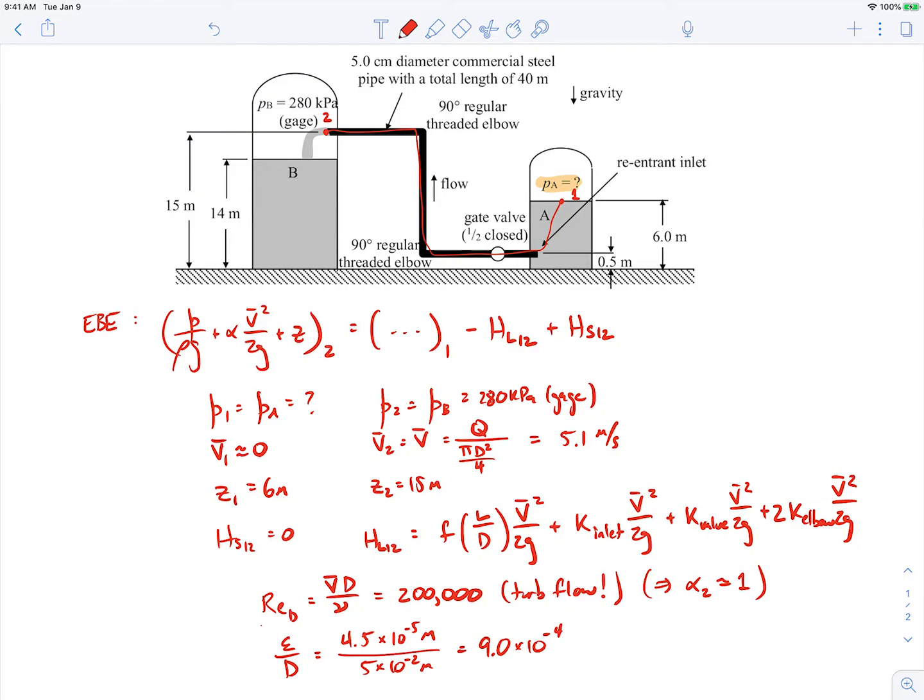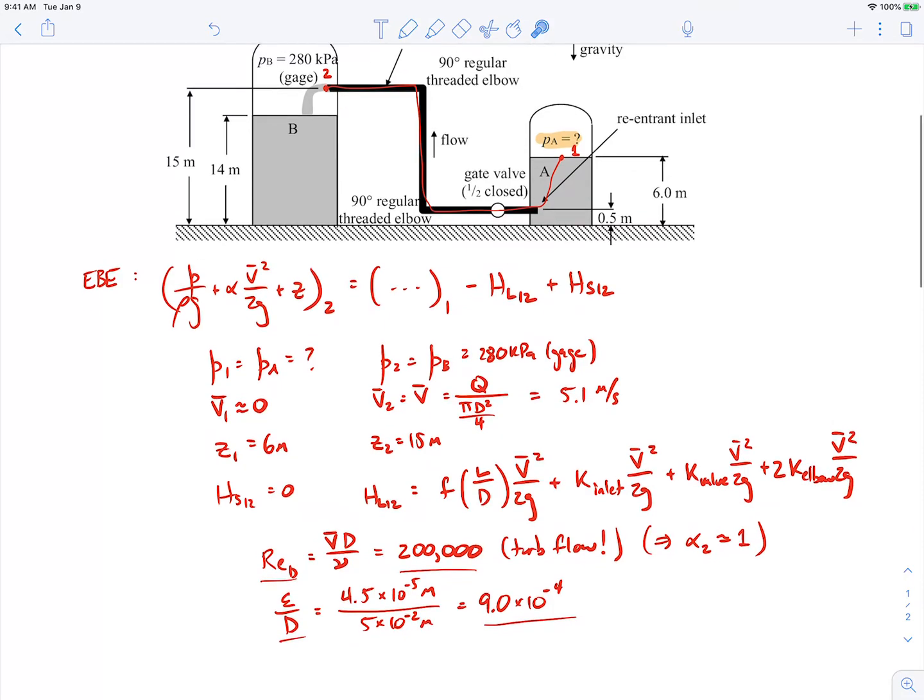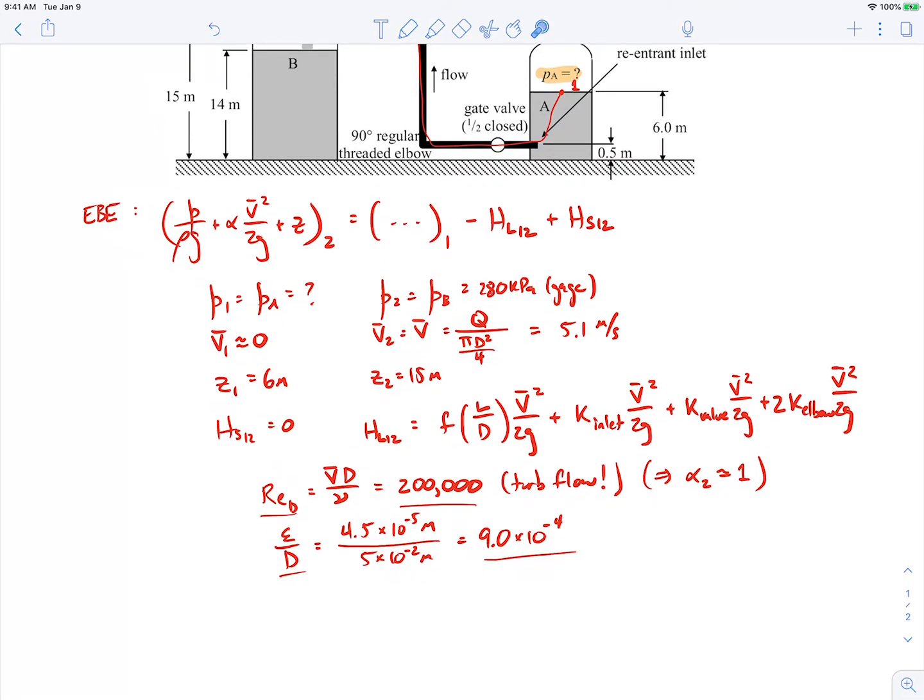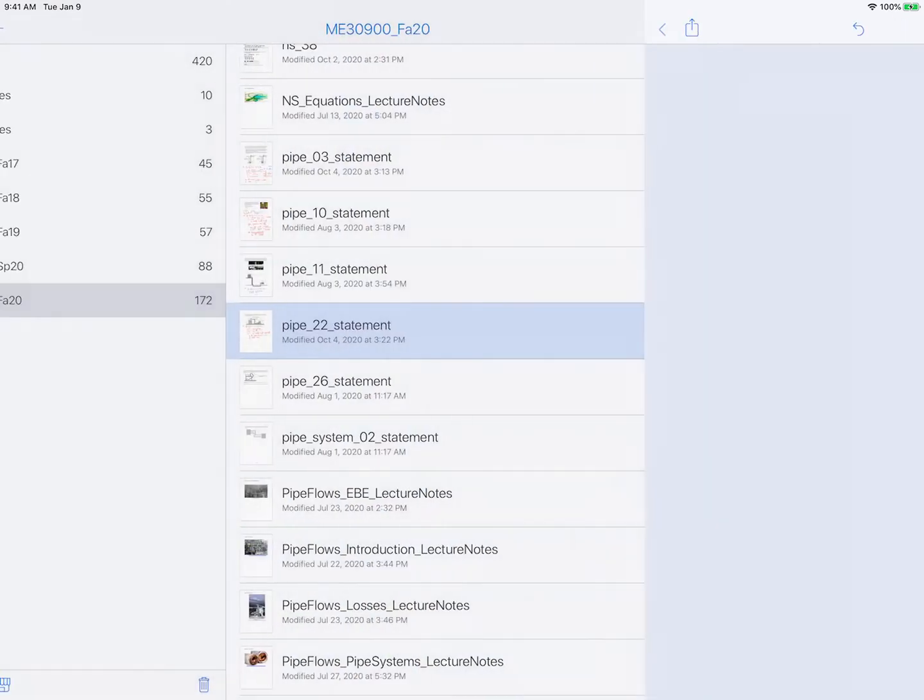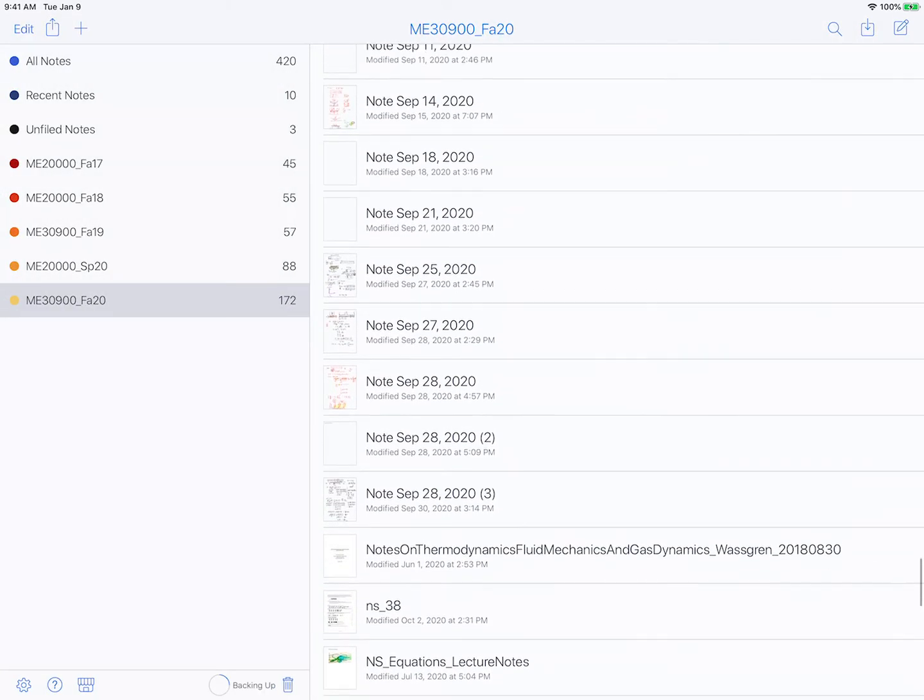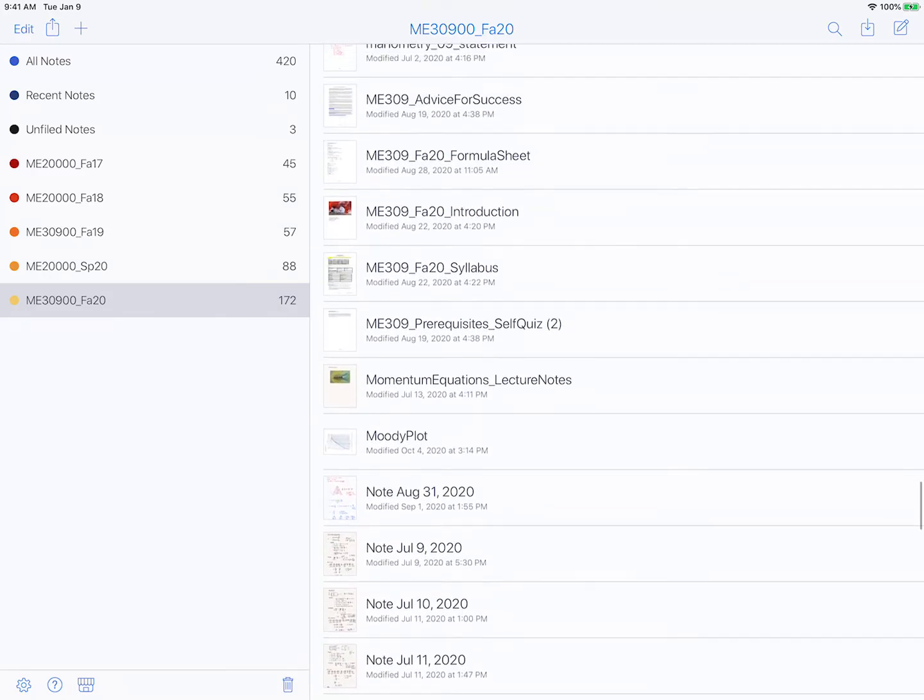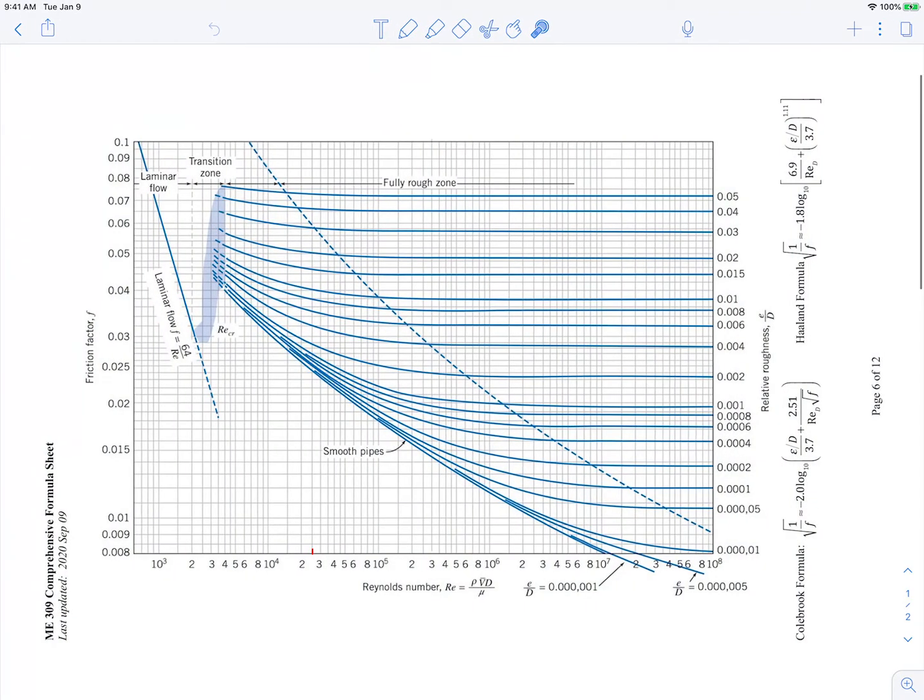Okay, so we have our Reynolds number. We have our relative roughness. And again, just as a reminder, we got this roughness value, the epsilon, from the formula sheet looking up roughnesses for commercial steel pipe. So let's use our Moody plot to find what our friction factor is. So let me go switch to the Moody plot.